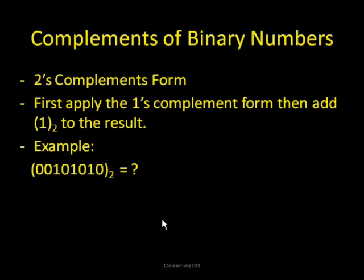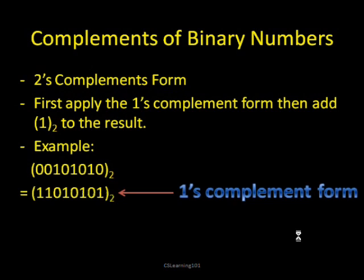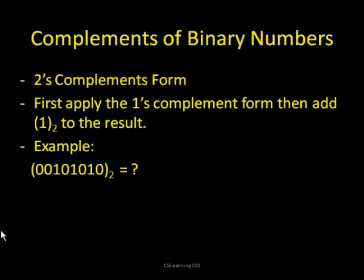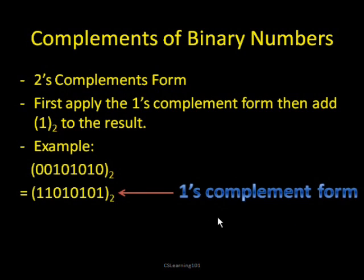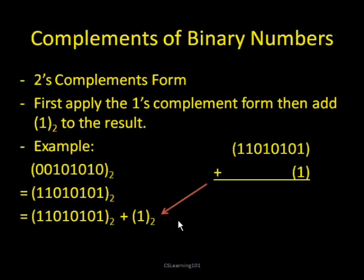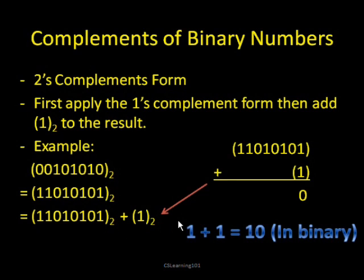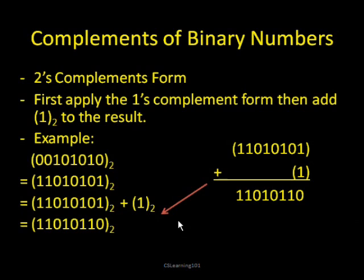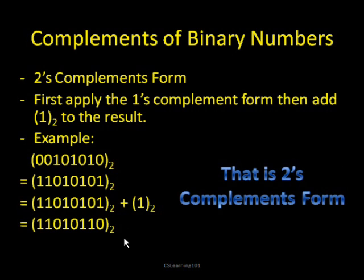Now the twos complement form — it's very similar to the ones complement. You first flip all the digits just as you did in ones complement, and then you add 1 to your final number. For example, here I have 00101010. If I convert that to 1's complement form I get 11010101. But to make it 2's complement form, I add 1 to it. And if you were to add these together on paper, you get 11010110. That's what the twos complement form would be.